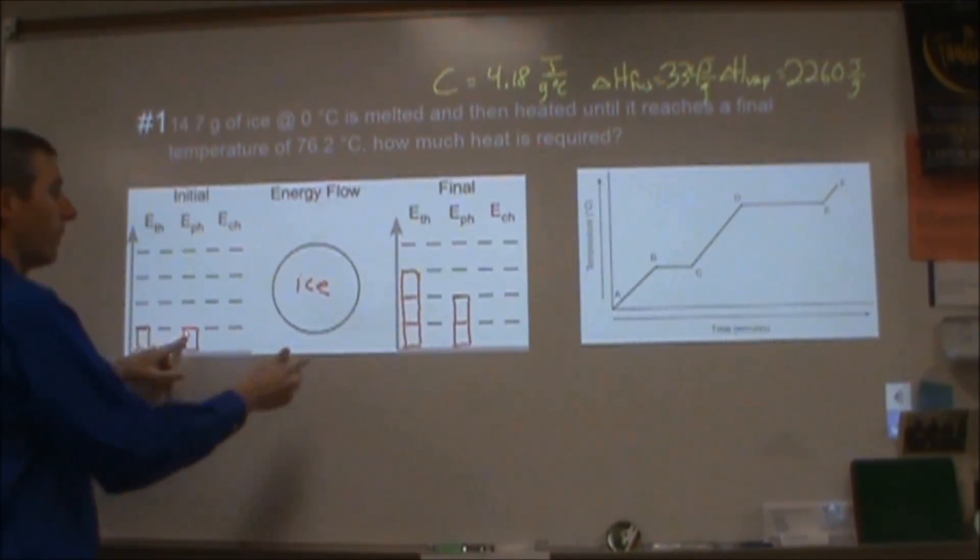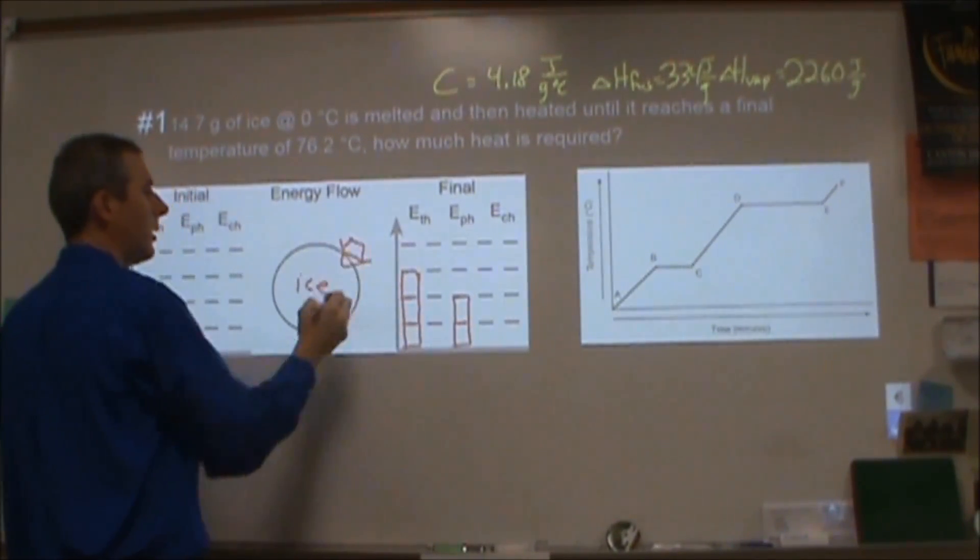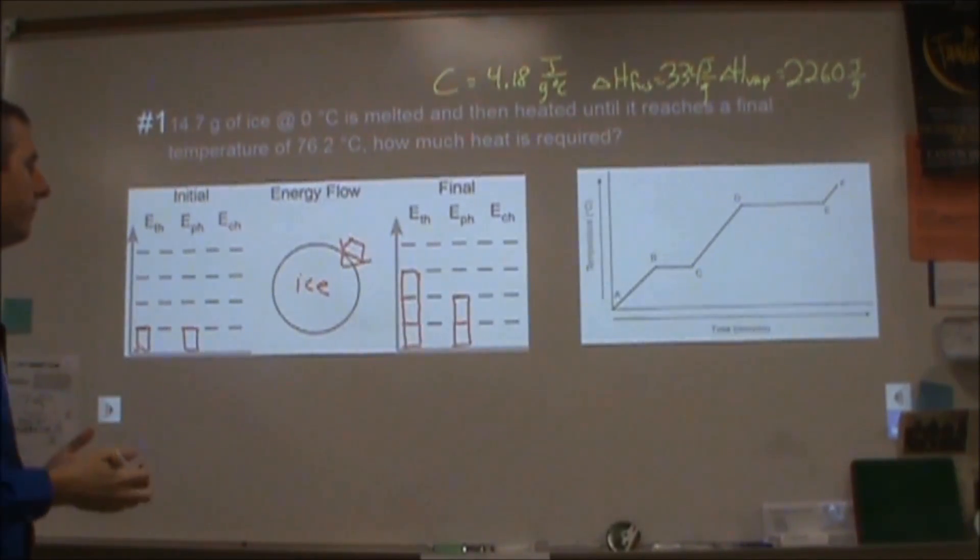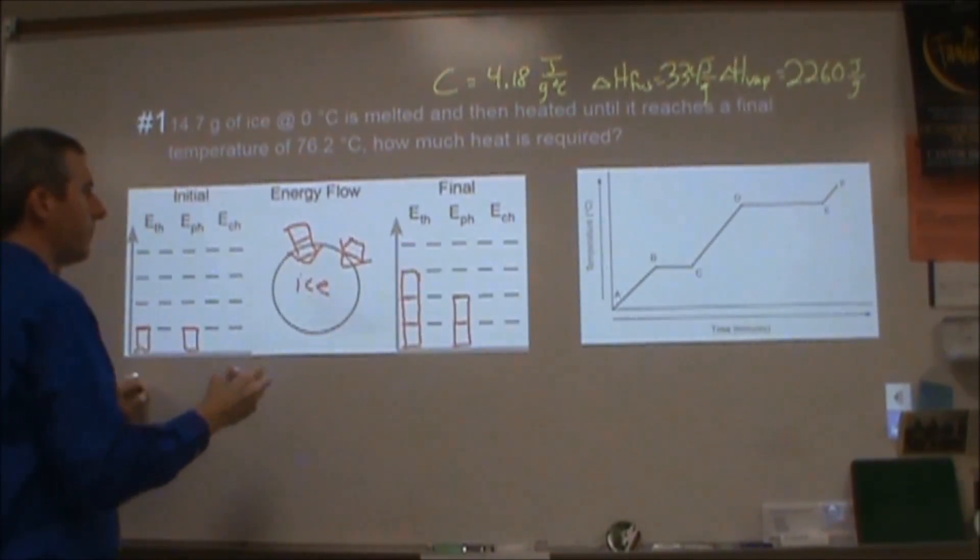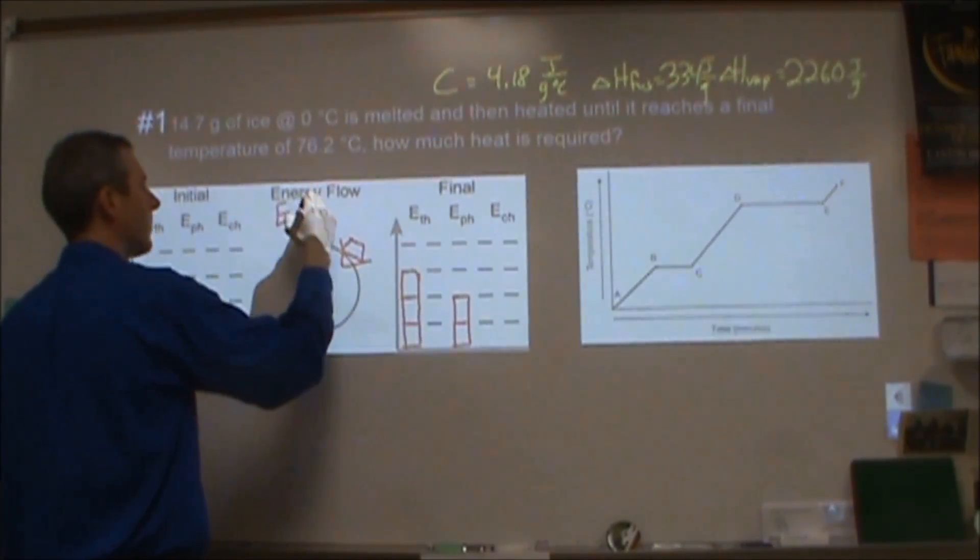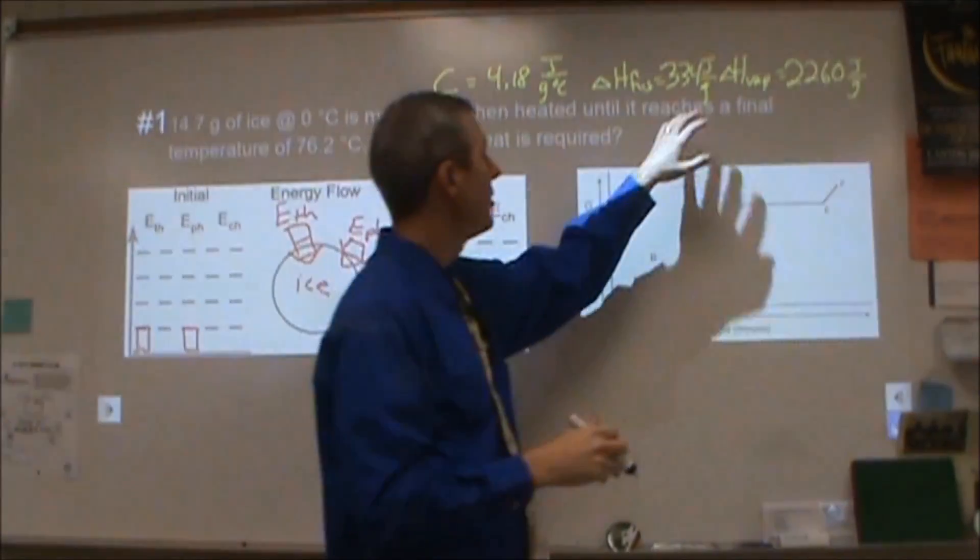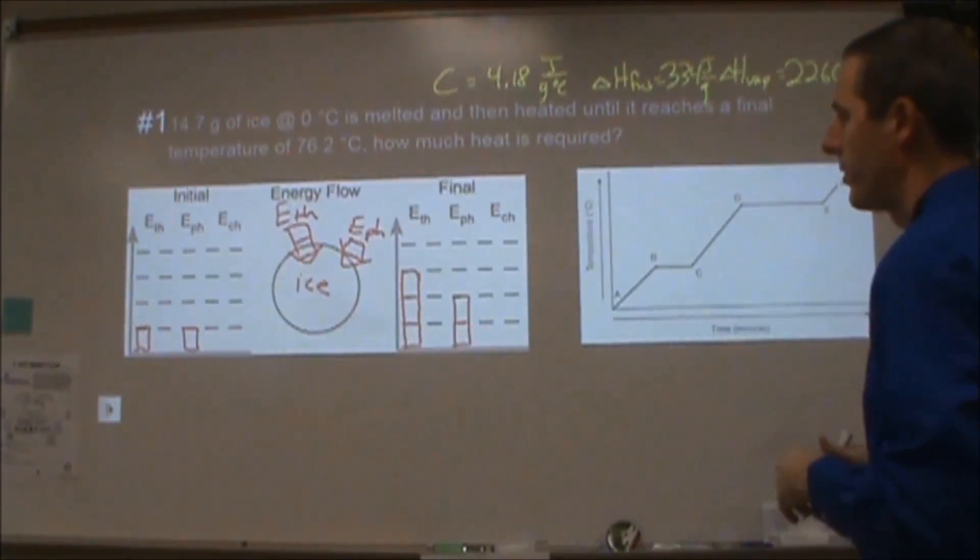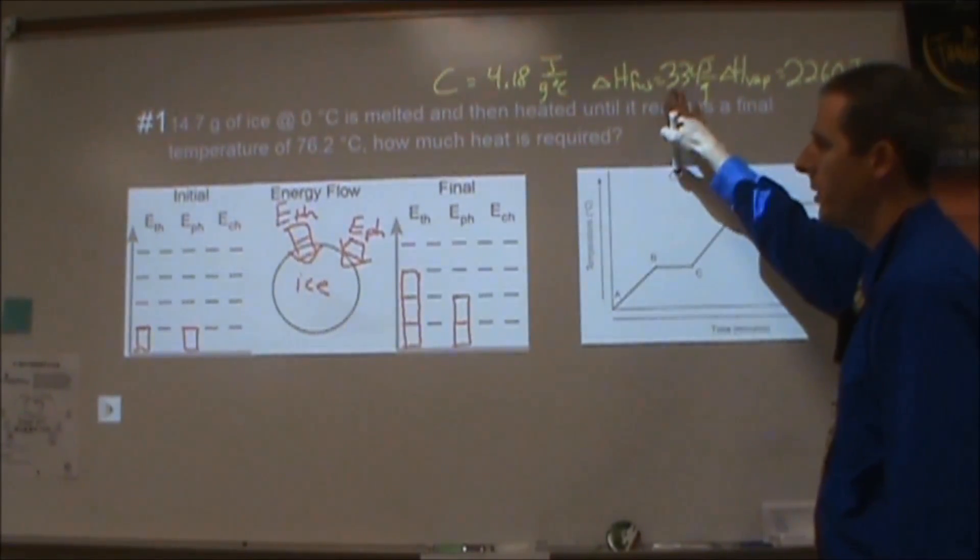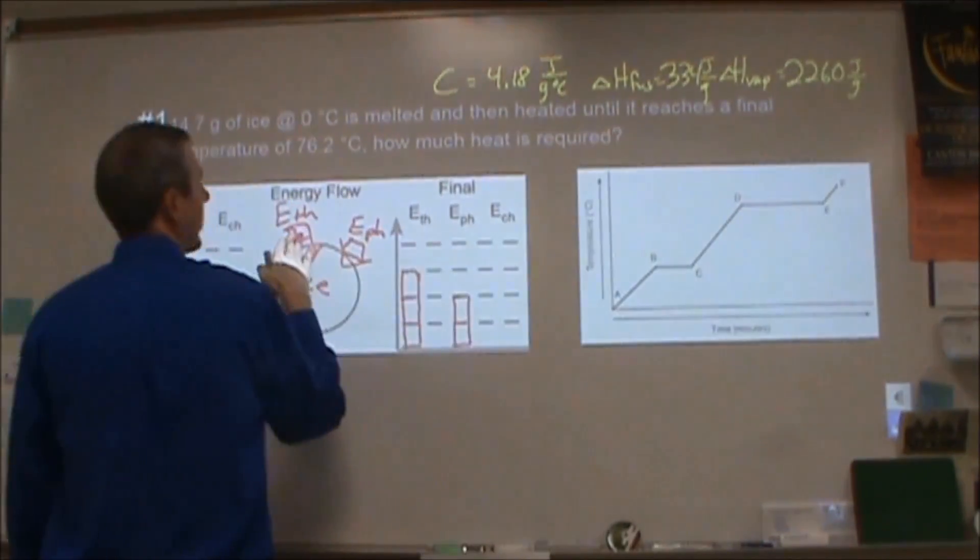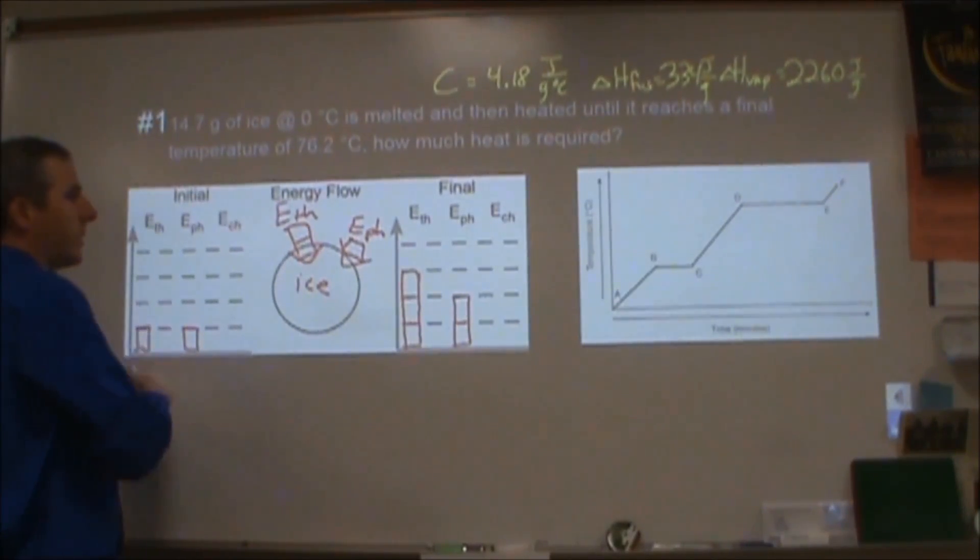We see that the phase energy is going up for the system, so I have a bar of phase energy coming into the ice, and then I have two bars of thermal energy coming into the ice as well. For the phase energy, I'm going to be doing a calculation using enthalpy of fusion. Since I'm changing from solid to liquid, I'm going to be using the enthalpy of fusion. For the thermal energy, I'm going to be doing a specific heat capacity calculation based on the temperature change.